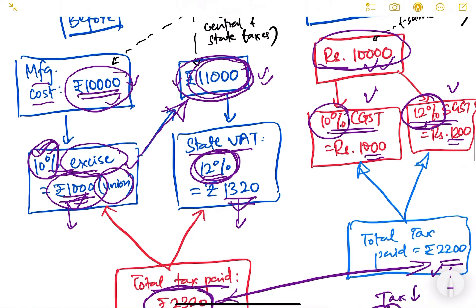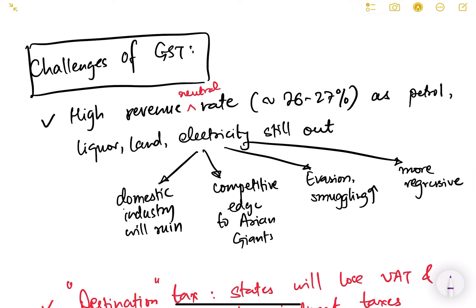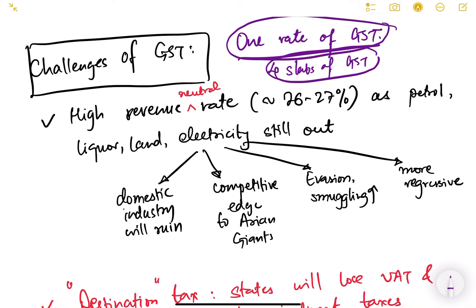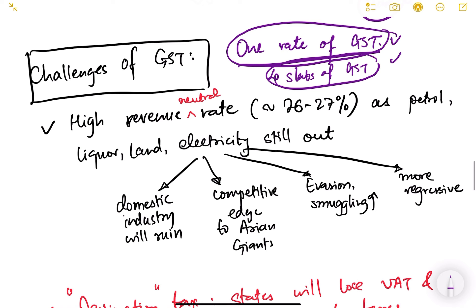GST also has challenges in India. In most countries there is just one rate of GST, but in India there are four slabs of GST. These four slabs sometimes result in confusion about which item belongs in which slab, and we often question the logic of item placement. Revision is required again and again. In most other countries there is a single rate, which means no confusion and a simpler system.